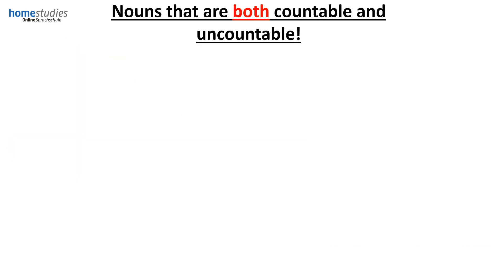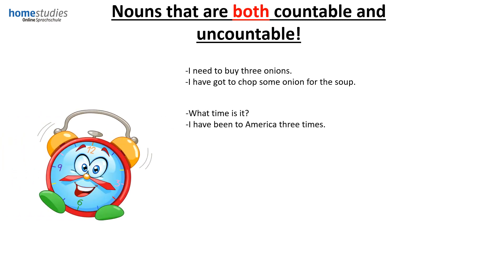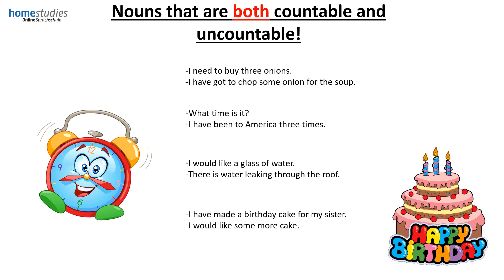Now let's have a look at nouns that are both countable and uncountable. For example: I need to buy three onions — countable. I have got to chop some onion for the soup — uncountable. What time is it? — uncountable. I have been to America three times — countable. I would like a glass of water — countable, remember it's a container. However if we said there is water leaking through the roof, it's uncountable because water is a liquid. And finally, I have made a cake — countable. I would like some more cake — uncountable.